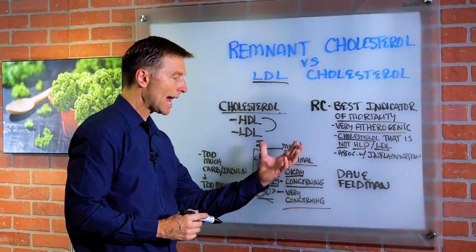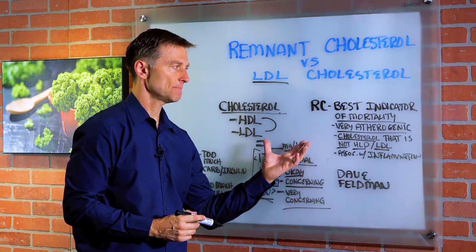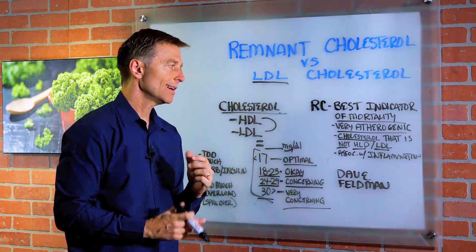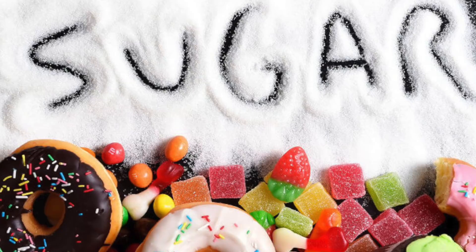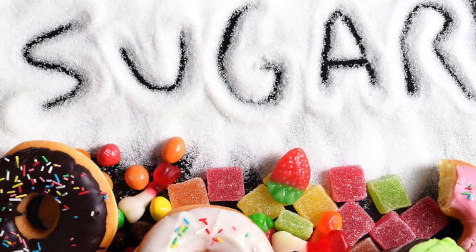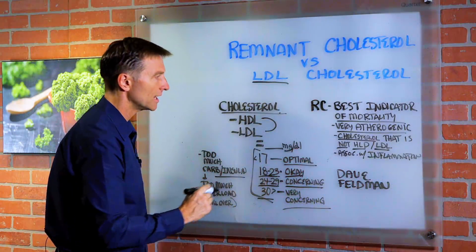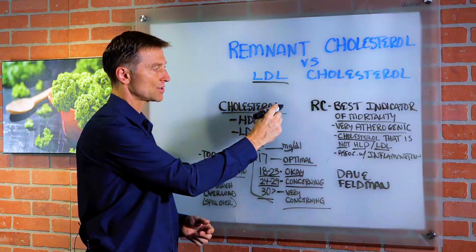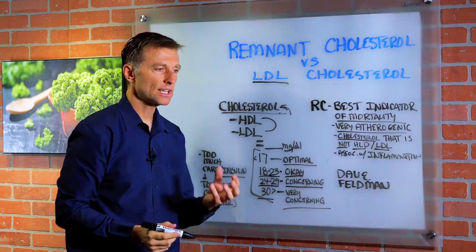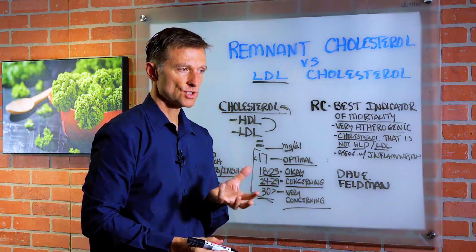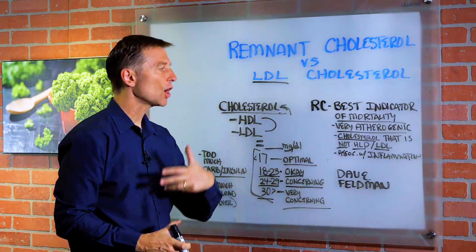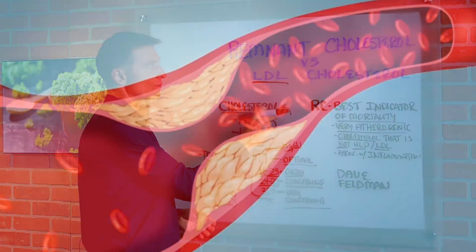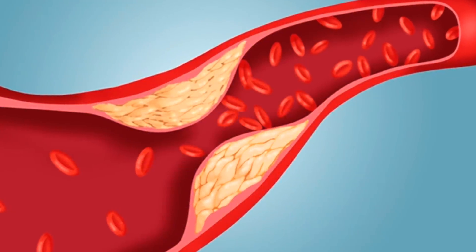Now, why would you have higher numbers versus lower numbers? It really has to do with a complex subject, which I'm going to let Dave explain in the video down below. The simplicity of it is that when you have too much sugar, carbohydrates, or too much insulin, you're going to create a lot more of this extra cholesterol. It's really too much concentrated stored energy throwing things out of balance and spilling over into this extra remnant cholesterol — and that's what's creating the damage.